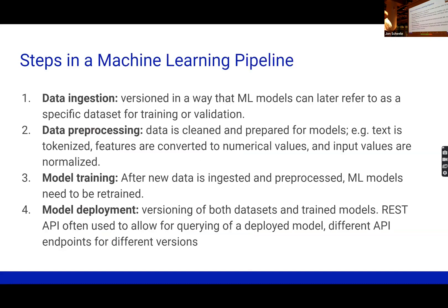In a machine learning pipeline, there are added complications: very often we're using different versions of the same data, transformed in different ways, and we may want to retrain our models. So data scientists are really concerned with the versioning of the data and want to know exactly the data's provenance. We go through some pre-processing — maybe to tokenize it, to remove personally identifiable information — and then the training of the model and the deployment, which can go back in a cycle, which is why versioning is important.